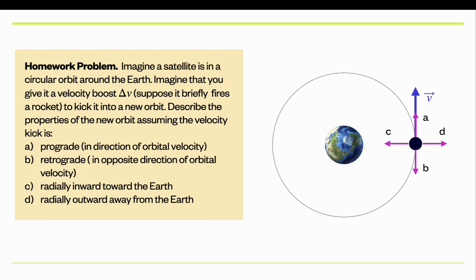Here's another one. It turns out that orbital dynamics can be a little counterintuitive. This homework problem gets you to think about how perturbing a circular orbit affects the dynamics. We've got a satellite orbiting Earth in a circular orbit with some velocity v. We want to fire the thrusters to give it a velocity kick in four different directions. When you fire the rocket forward — in the same direction as its orbital velocity — that's called a prograde velocity kick.